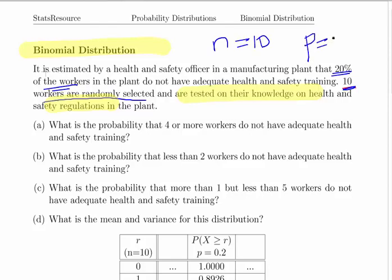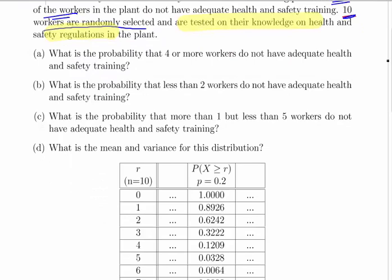Here are the four questions: What is the probability that four or more workers do not have adequate health and safety training? What is the probability that less than two—remember the wording is very important here—less than two workers do not have adequate training? What is the probability that more than one but less than five workers do not have adequate training? And finally, what is the mean and the variance?